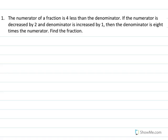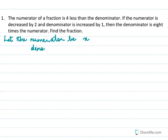The numerator of a fraction is 4 less than the denominator. This sum is about fractions, and every fraction is made up of a numerator and a denominator. Let us start the sum by assuming the numerator to be x and the denominator to be y.